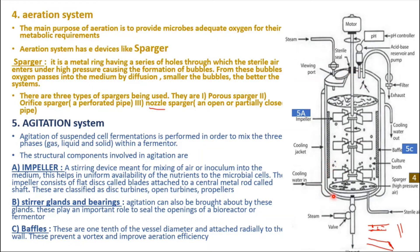The second component is seals and glands on the bearings, present at the openings of the bioreactor. The third component is baffles. Baffles are about one-tenth of the total vessel diameter and are attached radially to the wall. Their main function is to prevent vortex formation and improve aeration efficiency.